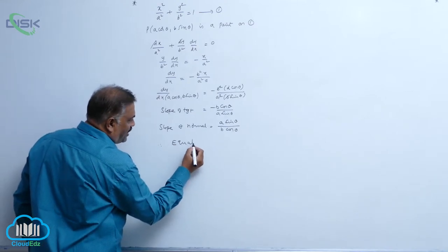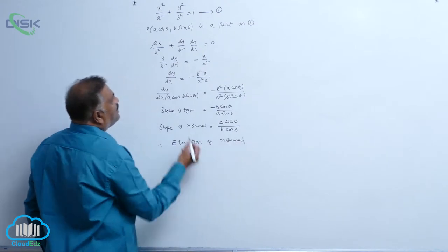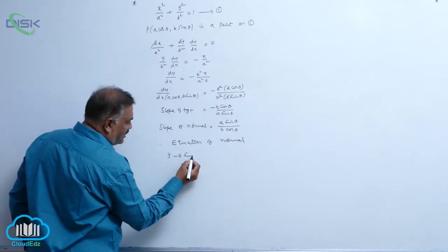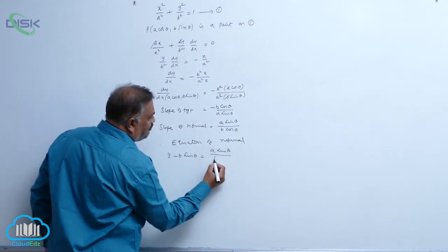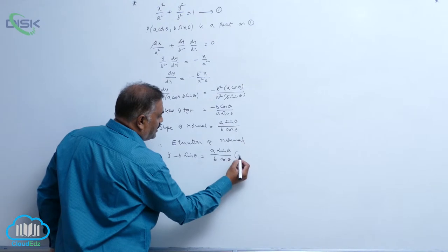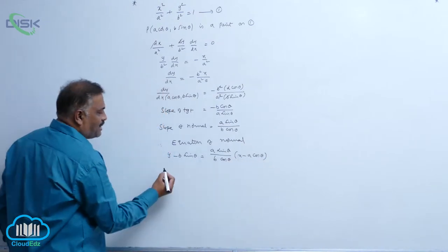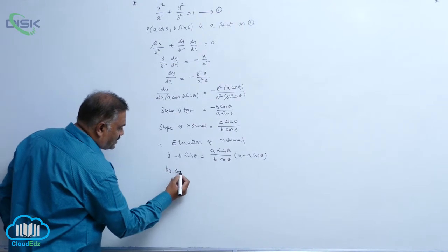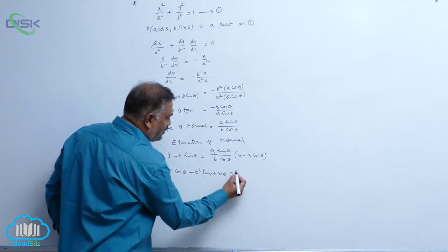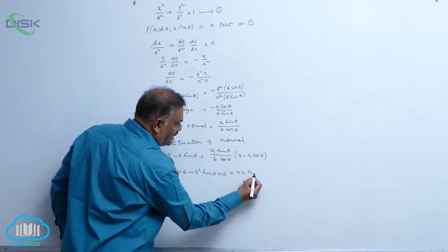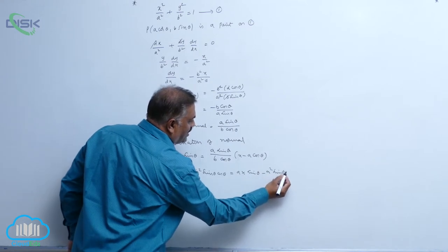The equation of the normal is given by the formula: y minus b sin θ equals a sin θ by b cos θ into (x minus a cos θ). Cross-multiplying: b y cos θ minus b squared sin θ cos θ equals a x sin θ minus a squared sin θ cos θ.